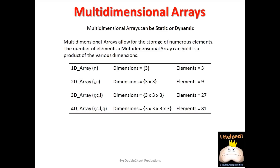For instance, if we look at a single-dimensional array with a size of 3, that means it can hold up to 3 elements. If we have a two-dimensional array with the dimensions of 3 by 3, it can hold up to 9, or the product of those two dimensions. A three-dimensional array with 3 by 3 by 3 can hold the product of those dimensions, or 27. The same thing with a four-dimensional array, where we have 3 to the 4th, and that can hold up to 81 elements.